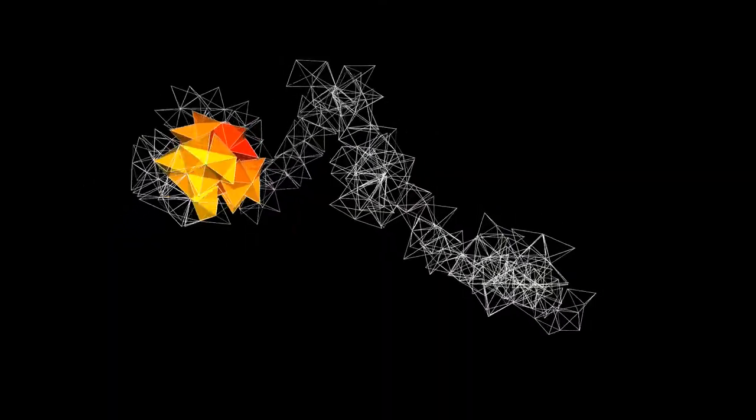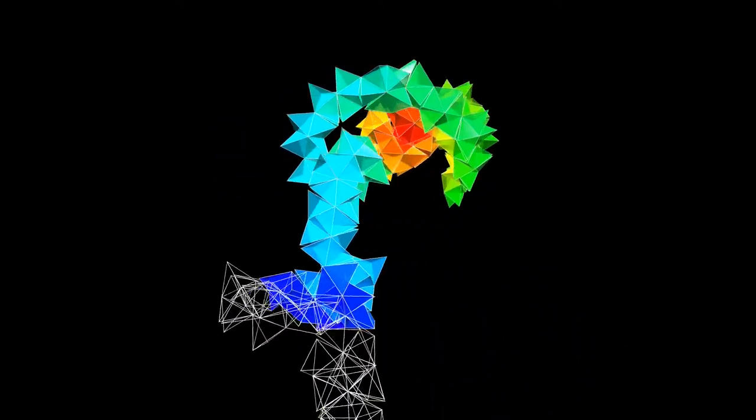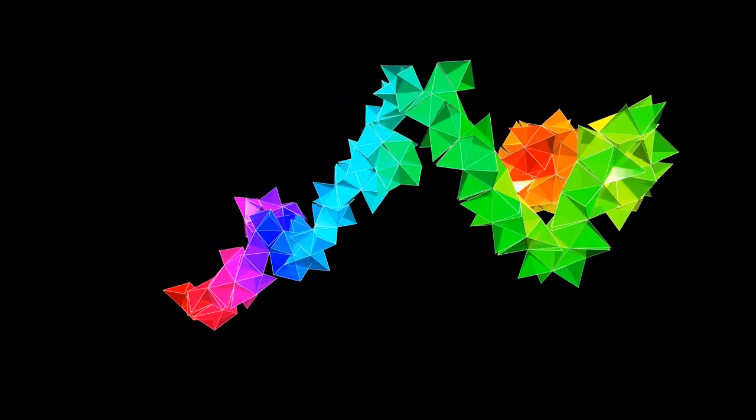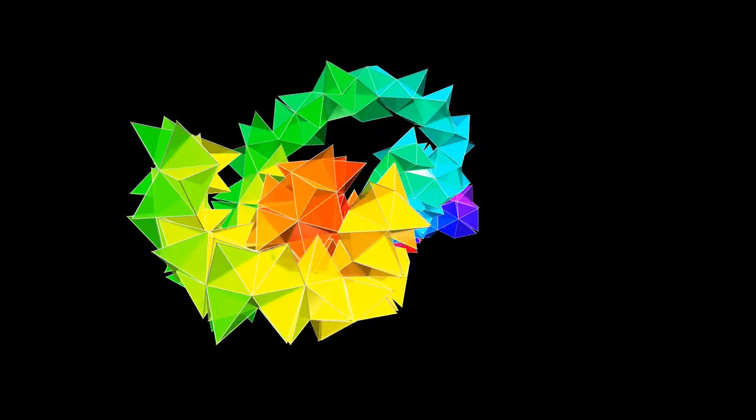In a second animation, all possible colors are used to highlight the intricate structure and a second version of the net of the 600 tetrahedra is shown as well. It is just a different representation for the same four-dimensional polytope.